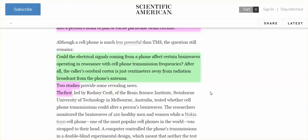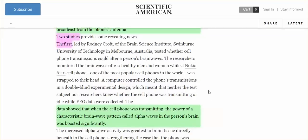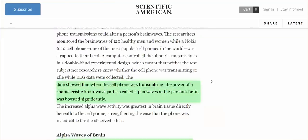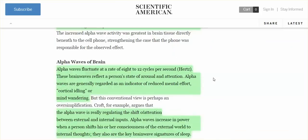The cerebral cortex is just centimeters away from radiation broadcast from the phone's antenna. Two studies. The first one led by Rodney Croft of the Brain Science Institute found that when the cell phone was transmitting, the power of a characteristic brain wave pattern called alpha waves in the person's brain boosted significantly. Alpha waves fluctuate at a rate of 8 to 12 cycles per second.